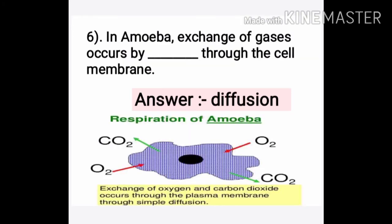Question six: In amoeba, exchange of gases occurs through the cell membrane by which process? The answer is diffusion. Oxygen from the outside atmosphere directly enters the body, and carbon dioxide from inside the body is directly released into the atmosphere — this process is called diffusion.